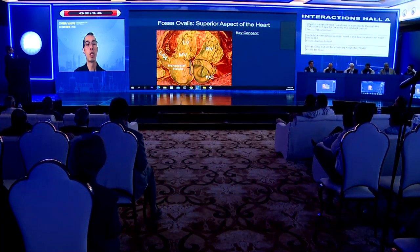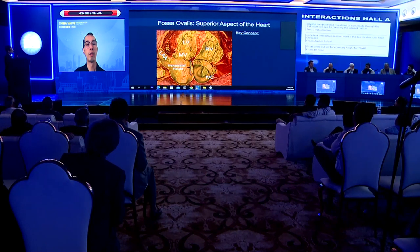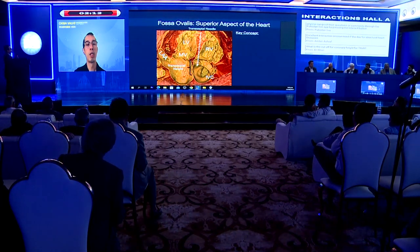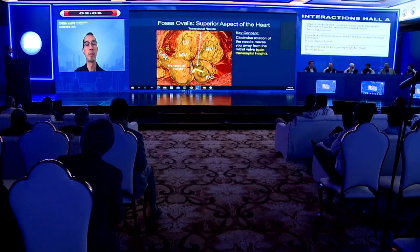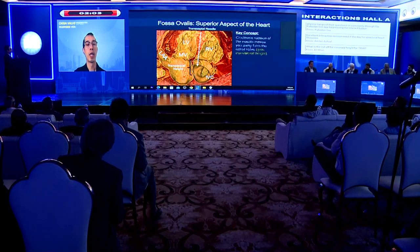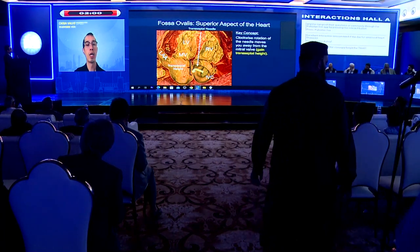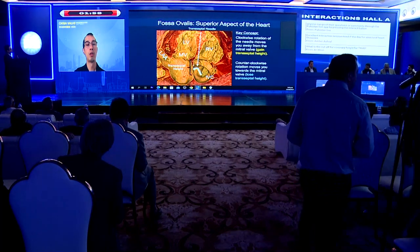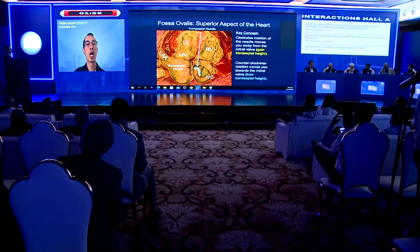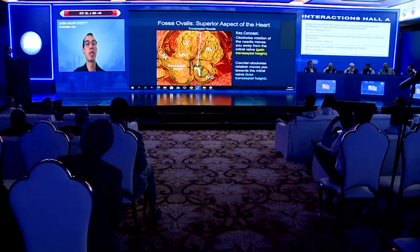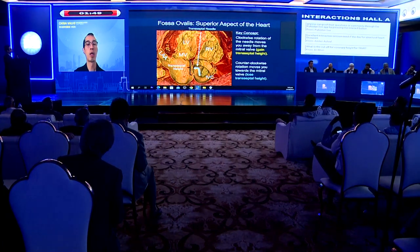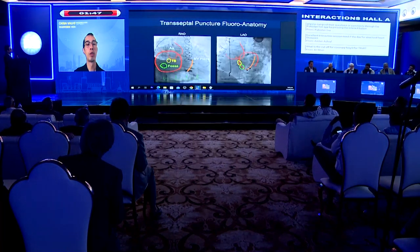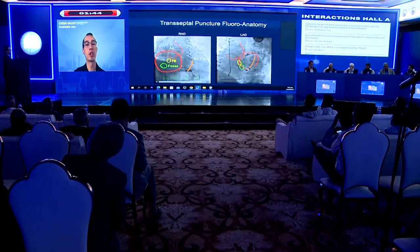To gain height with the transeptal needle, clockwise rotation is used — moving the needle posteriorly toward the interatrial groove. Counter-clockwise rotation loses height. On RAO fluoroscopy, going posterior to gain height means moving to the left side of the screen. On LAO view, posterior movement is confirmed in the opposite direction. This is distinct from simply moving up or down on fluoroscopy.